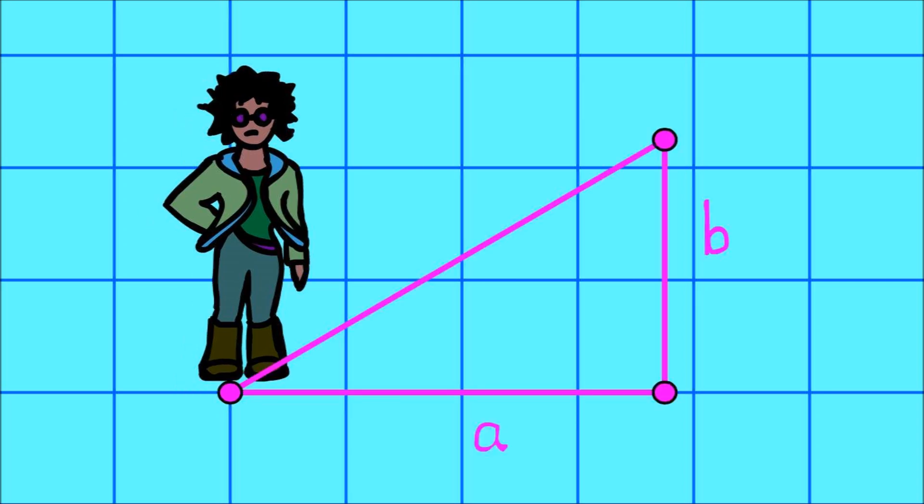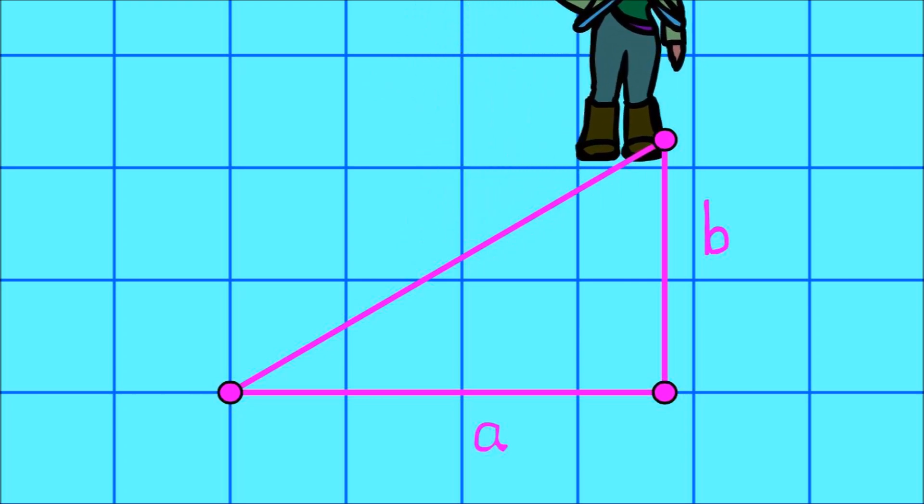If your character spawns on an infinitely large sheet of graph paper, then moves A boxes to the right and B boxes upwards, then how far is she from her starting point?